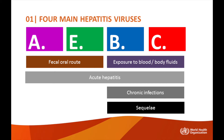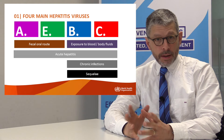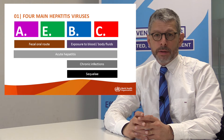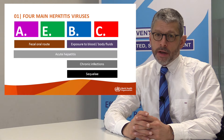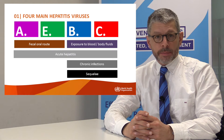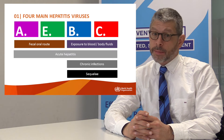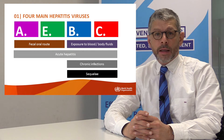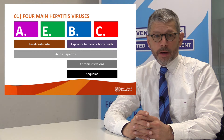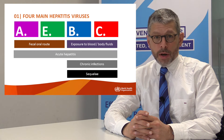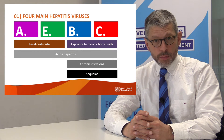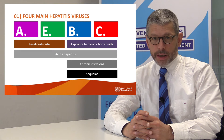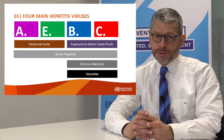We're dealing with four main hepatitis viruses: hepatitis A virus, hepatitis E virus, hepatitis B virus, and hepatitis C virus. They are ranked according to how they affect humans, not by alphabetical order.